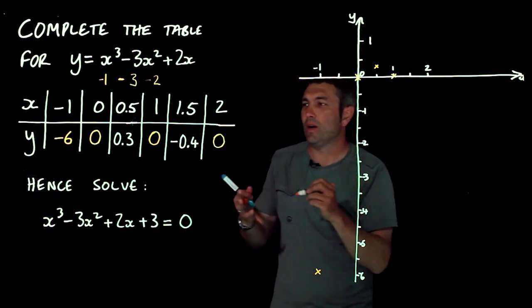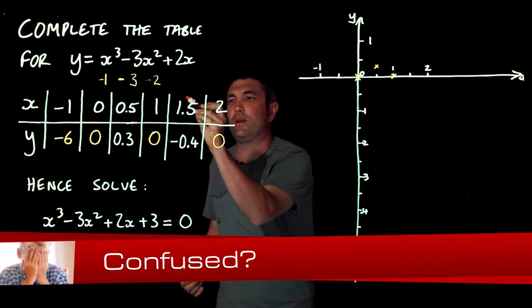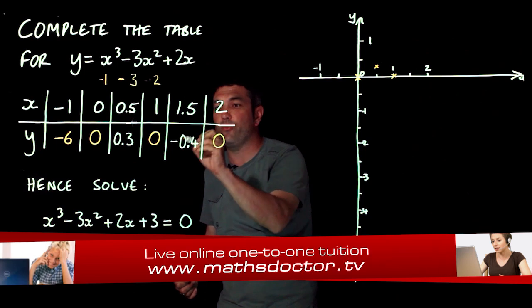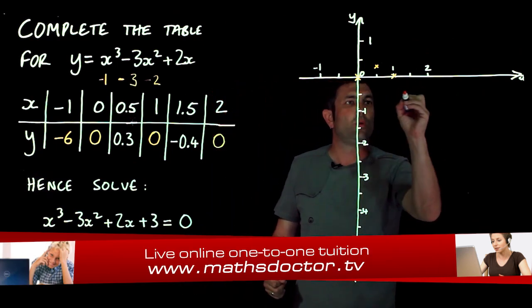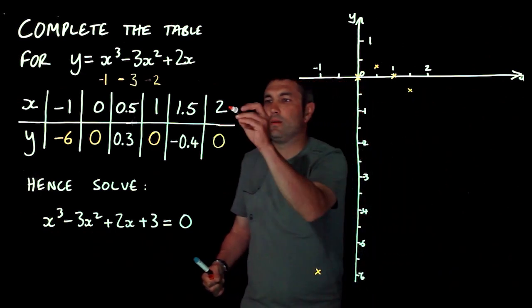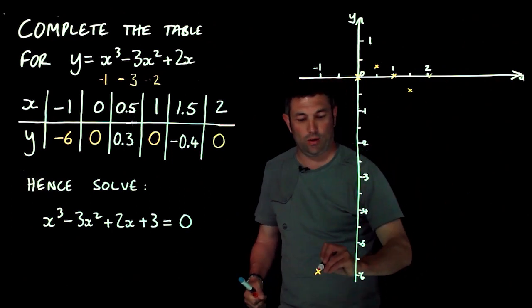But it's often worth having a look to see if you can guess what you've got. So 1.5 and negative 0.4. So 1.5, negative 0.4, which is about there. And then 2, 0. So it doesn't go down there. It's going to go like this.